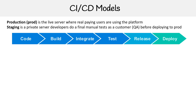So this is our pipeline from code to deploy. And I'm going to show you three different models. If you look online about CI/CD, you might see some additional steps, so there is a bit of flexibility in terms of how these are defined. But this is what I'm going to show you and it pretty much is what it is.